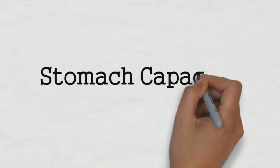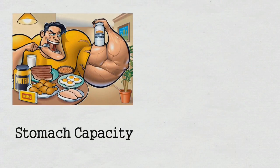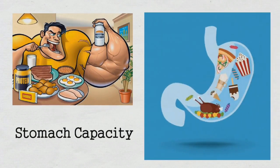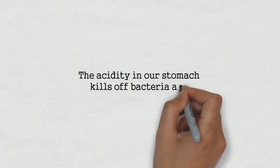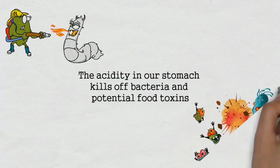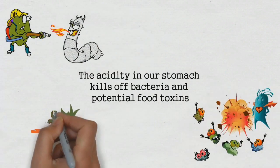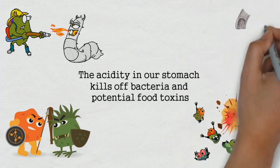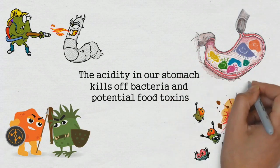A normal stomach can hold up to four cups, or one liter, of chewed food. Besides just digesting your food, the stomach helps protect your entire body. The acidity in our stomach helps sterilize whatever you're eating, killing off bacteria and potential food toxins.